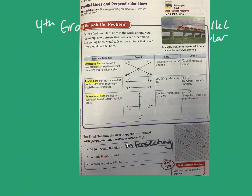Now let's look at West 35th Street and 7th Avenue. They intersect with each other, and they do make four right angles — so those are perpendicular. We could say intersecting too, but it's more specific and accurate to say perpendicular intersecting lines. Finally, West 37th Street and West 36th Street run side by side, never touching, the same distance apart — so those are parallel lines.